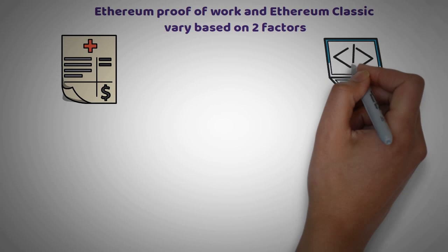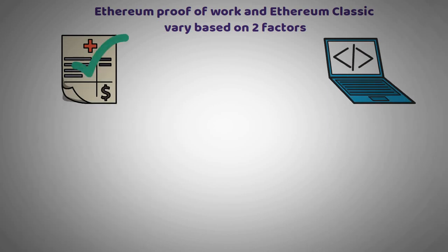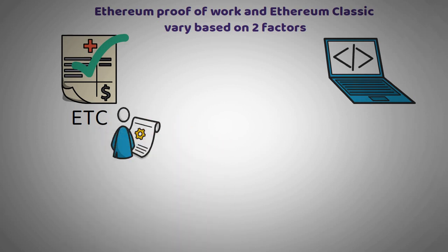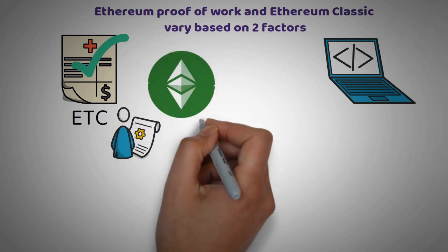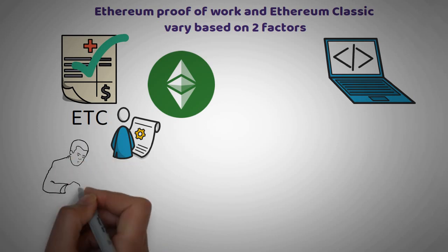And starting with the first point, which is utility. Ethereum Classic is also called ETC and it has lots of use cases, while Ethereum proof-of-work is the exact opposite. At the moment, lots of dApps have been built on Ethereum Classic because it has smart contracts functionality. This has expanded the use cases for ETC and made it more attractive to developers.